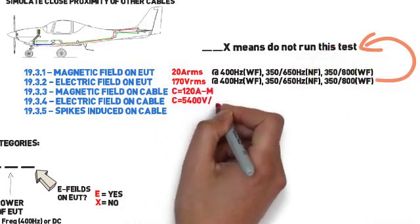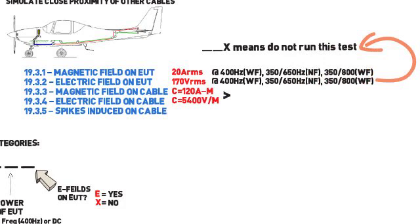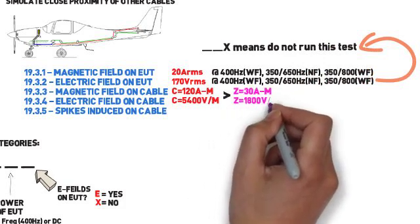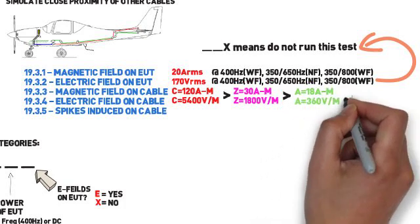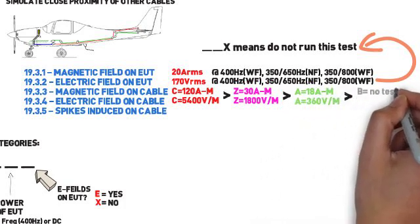Test levels for magnetic fields and electric fields on the cable are a little less straightforward, but you can easily compare the categories by looking at the max across the fundamental frequency. C is the most severe, followed by Z, A, and B.